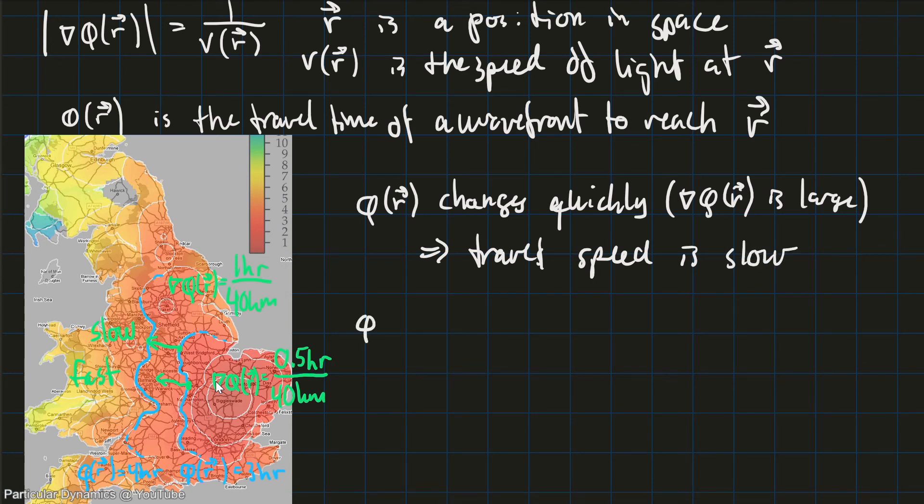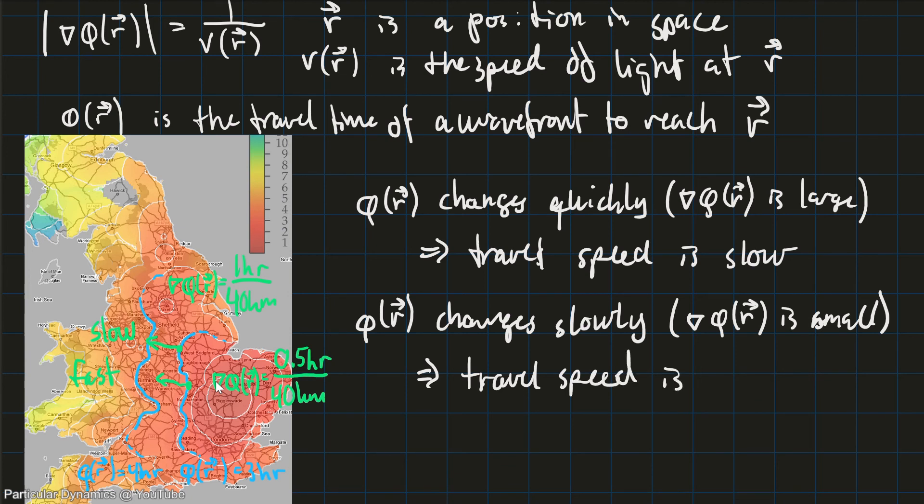On the other hand, if phi of r changes slowly, in other words, when the gradient of the travel time is small, that's the second case here. That corresponds to the travel speed being fast. Travel speed is fast.